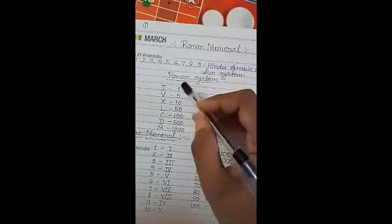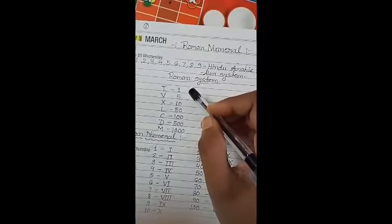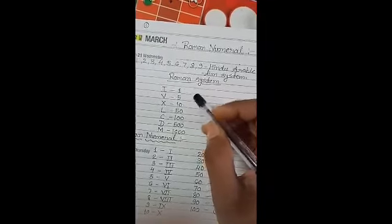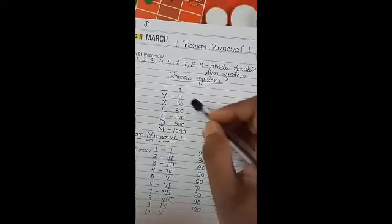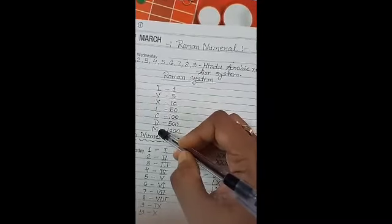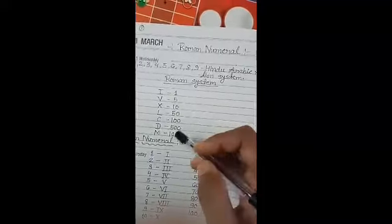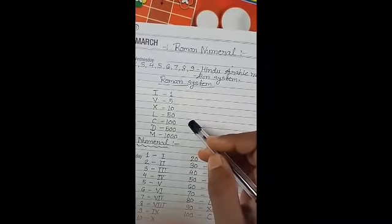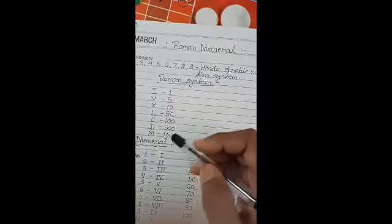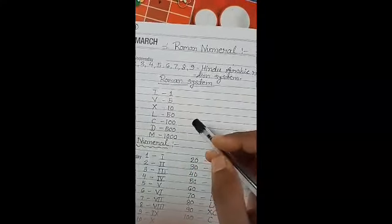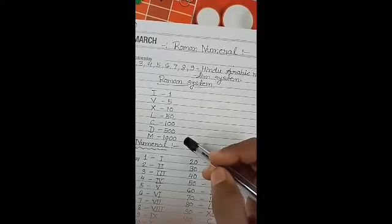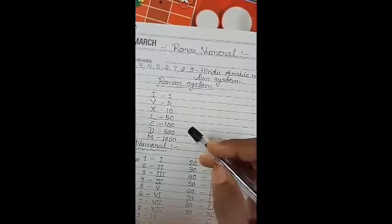But, in Roman numeral, there are 7 symbols to represent any number. So, what are they? These are I, V, X, L, C, D and M. And Roman number system is always written in capital letters like that. So, what are the values of these numbers? Let's talk about these values.